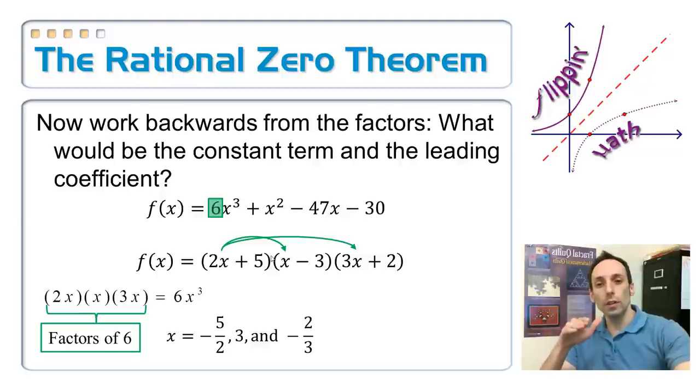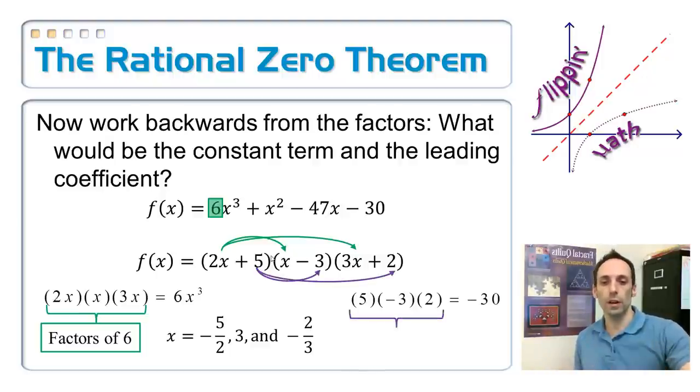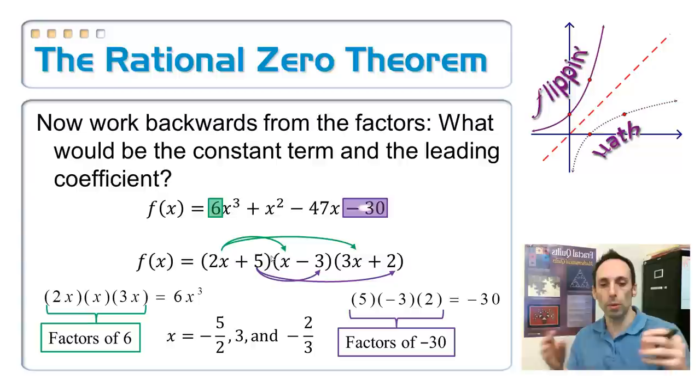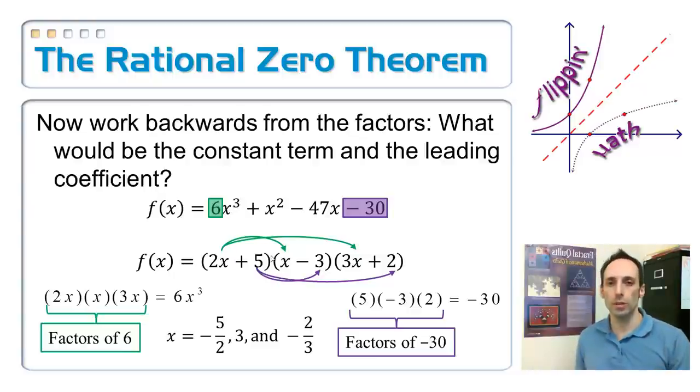So if I look at all of the constant terms there, I multiply all those things together. I get five times negative three times two. Multiply those all together, I get that negative 30. Those are all factors of the negative 30. And if I look at my answers, I have factors of 30 on top divided by factors of 6 on the bottom. That's what the rational zero theorem is helping us do.